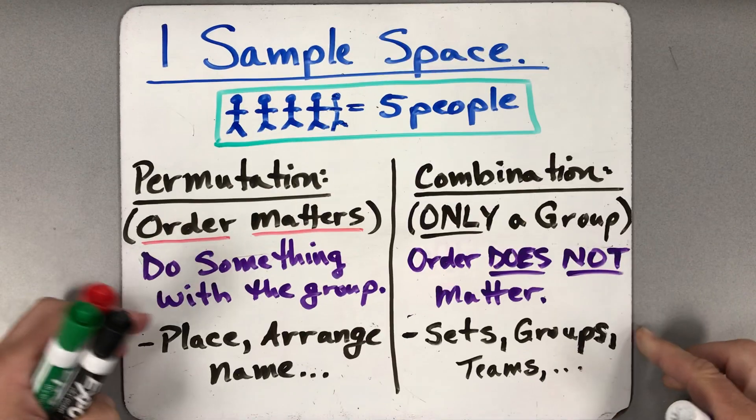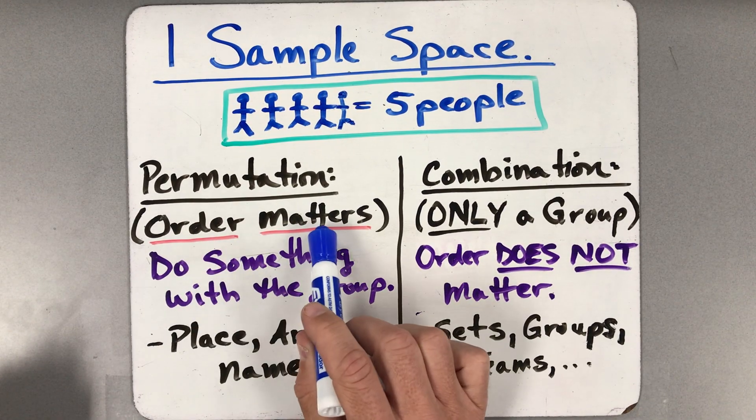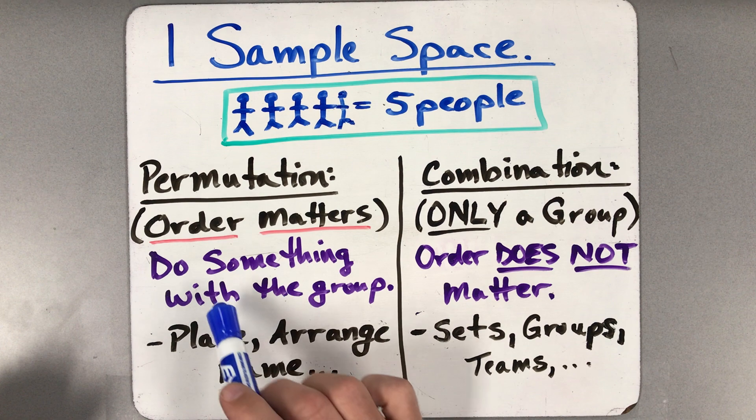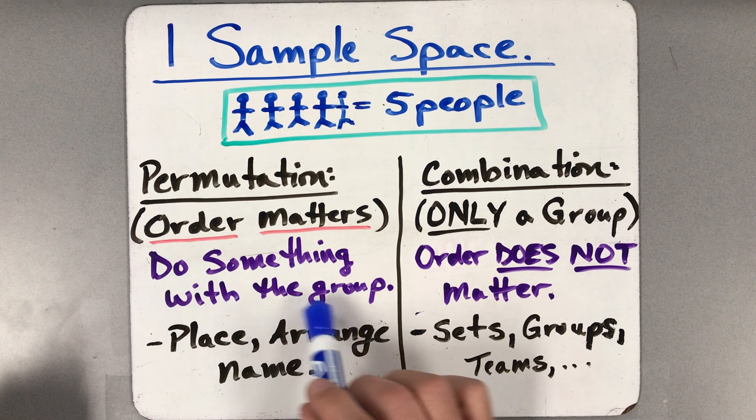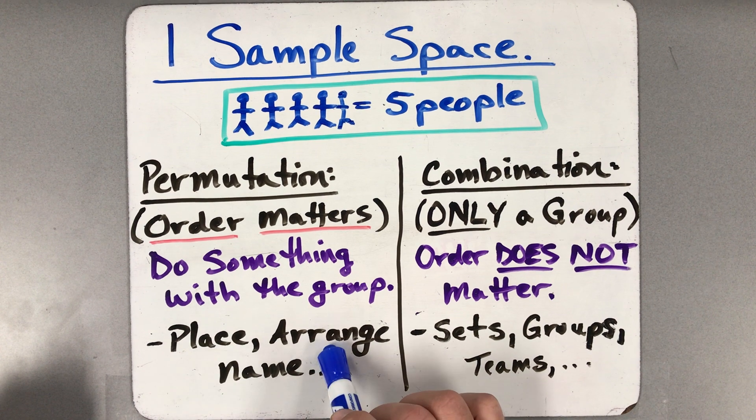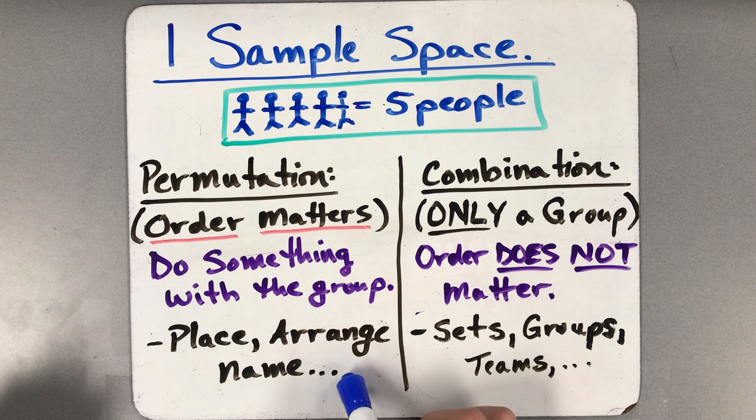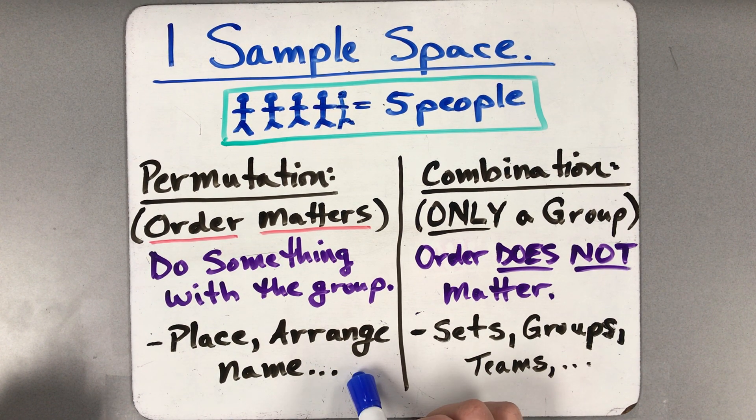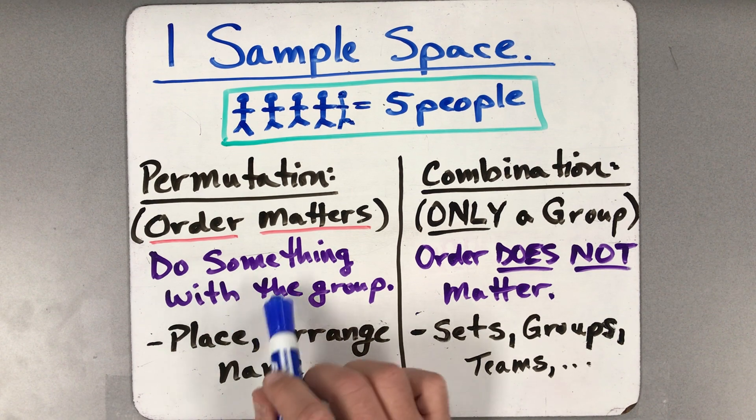So let's focus on the one sample space situation first. When I have one sample space, there are two kinds of situations. If the order is important, where the order matters, we call those permutations. Meaning you're going to do something special with those things you're taking in the group. Like you might place them in a certain spot, or you might arrange them, name them, order them, or something to that effect. Once you do something special with the group of things you're taking, that's called a permutation.